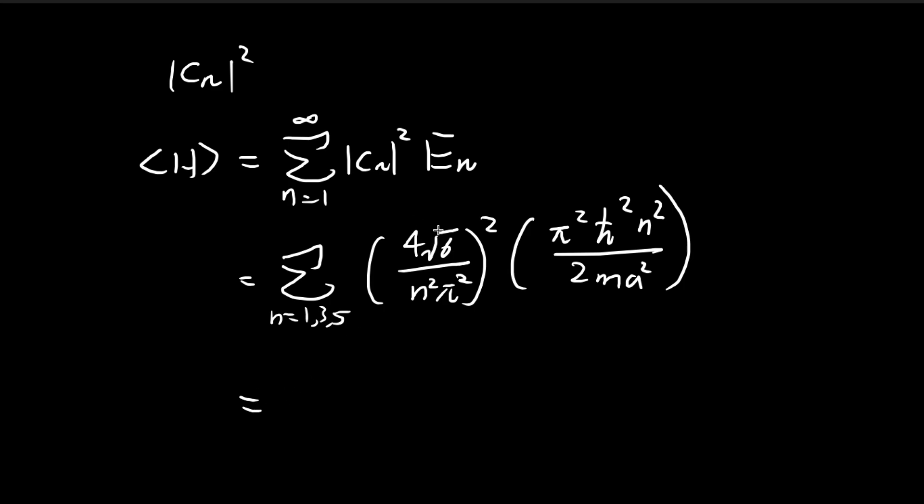So immediately you can do some simplifications. So 4 times the square root of 6, if you square this, this is just going to be 96. So essentially you have 16 times 6, divided by n to the power of 4, pi to the power of 4. So as you can see, the 2's, they cancel out. 2 of the pi's, they cancel out. And then 2 of the n squared, they cancel out.